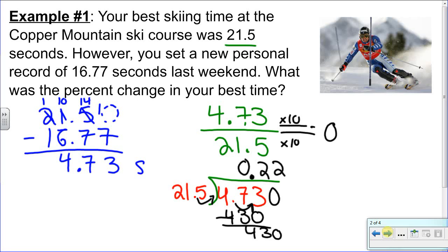We find that the change is 22 hundredths, which is a 22% change and it's actually a decrease. We'll call this a decrease because our time went down. While a little less than 5 seconds doesn't sound like a lot of time, in the ski race it's apparently a pretty big improvement we made.